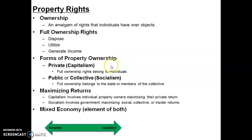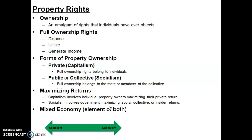At the broadest level, forms of property ownership include private ownership — which we call capitalism — where individuals can hold full ownership rights, or public/collective ownership — which we call socialism — where the state or collective holds property rights. Capitalism versus socialism is really a question of who can own property. Under capitalism, individual owners decide how to use their property to maximize their return. Under socialism, the government decides — for example, in government housing, the government determines who uses it and how.